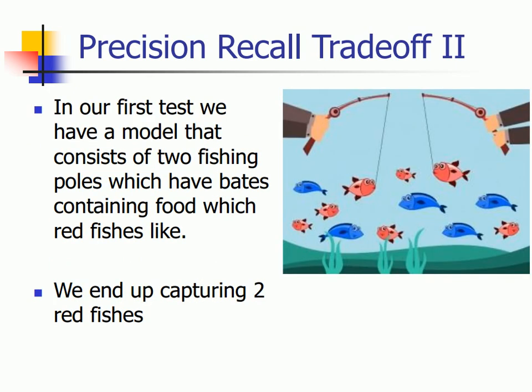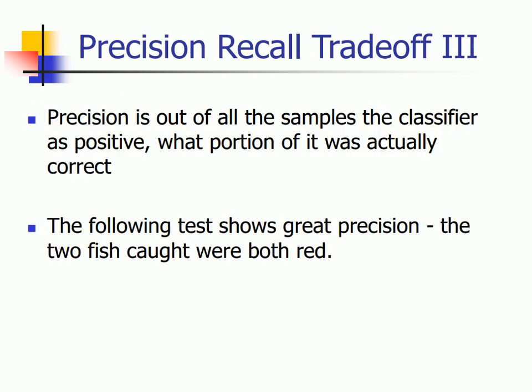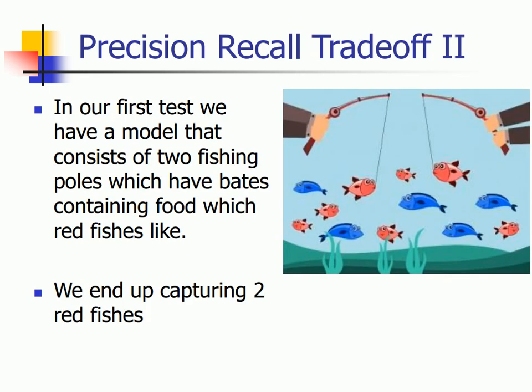In the first model that I make, it consists of two fishing nets which have baits containing food which my red fishes like. We observe that we end up capturing two red fishes, which is what we desired. Precision is out of all the samples that the classifier classified as positive, what portion of it were actually correct. The following test shows great precision — out of the two red fishes that we have caught, both of them are red.